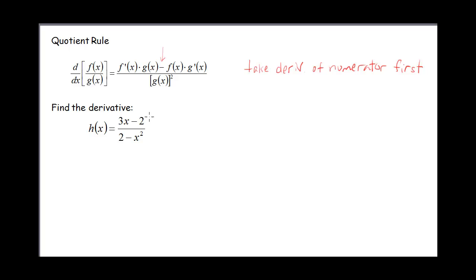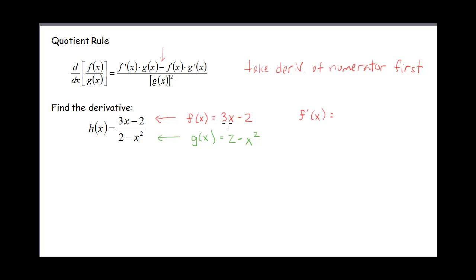Let's just practice using it. My function f of x is going to be 3x minus 2, and the g of x in our formula is going to be 2 minus x squared. If it helps you, off on the side you can put: the derivative of f of x is going to be the derivative of 3x minus 2, so that's 3. And the derivative of g of x is the derivative of 2 minus x squared, and that is going to be negative 2x.